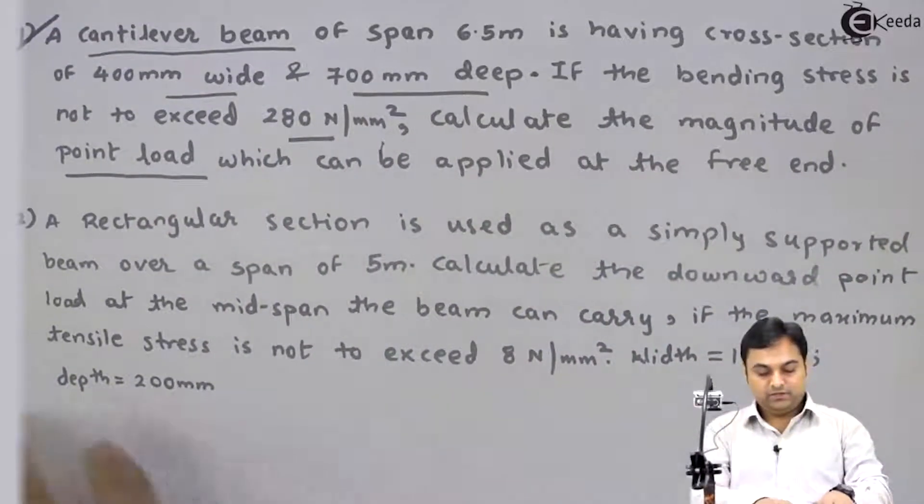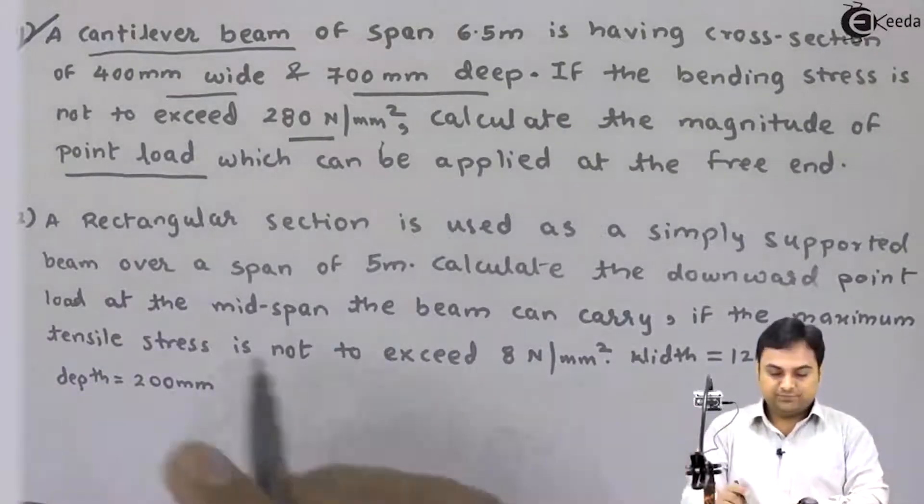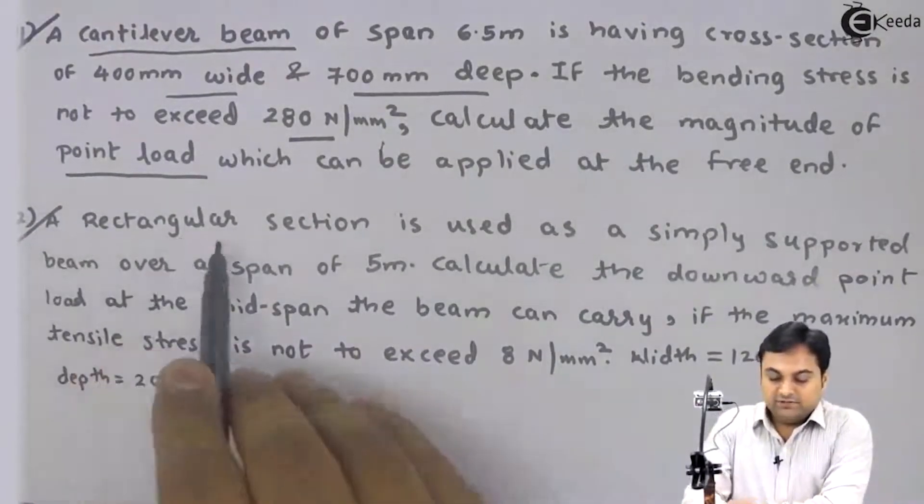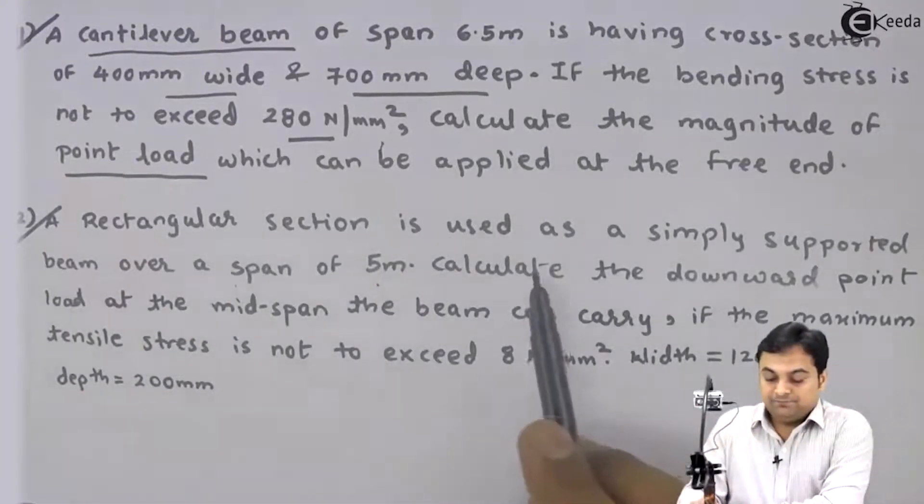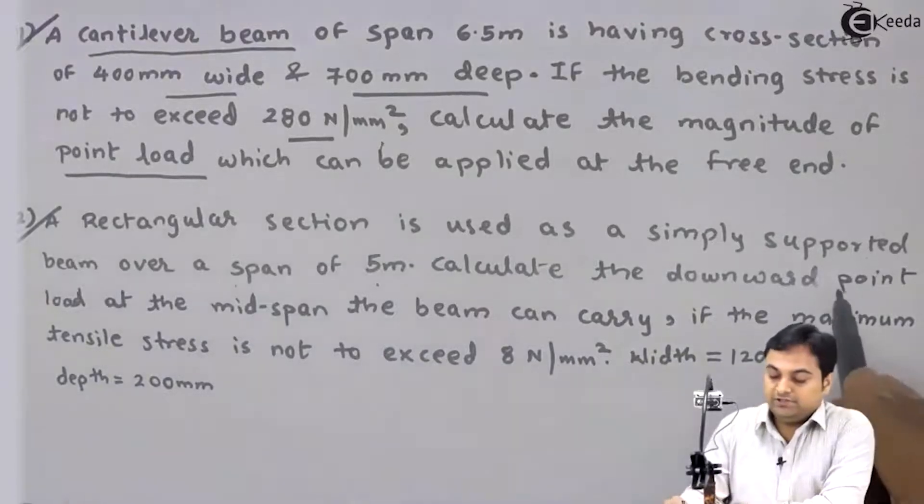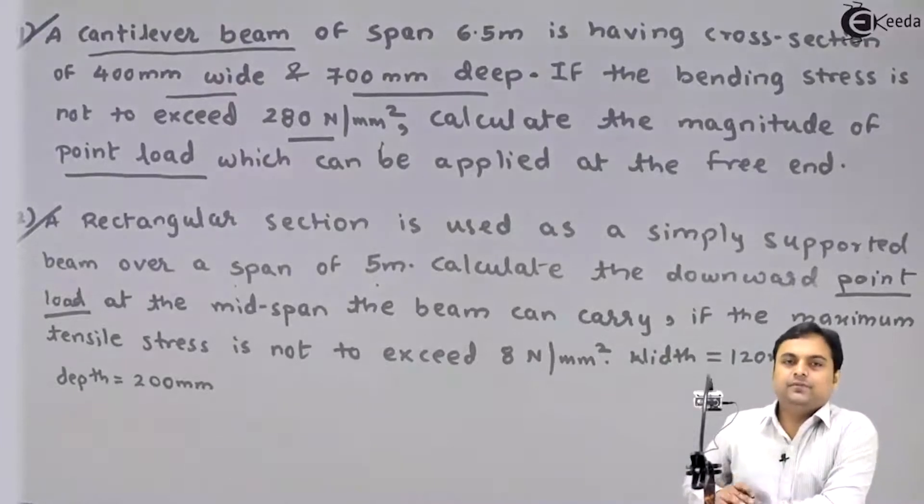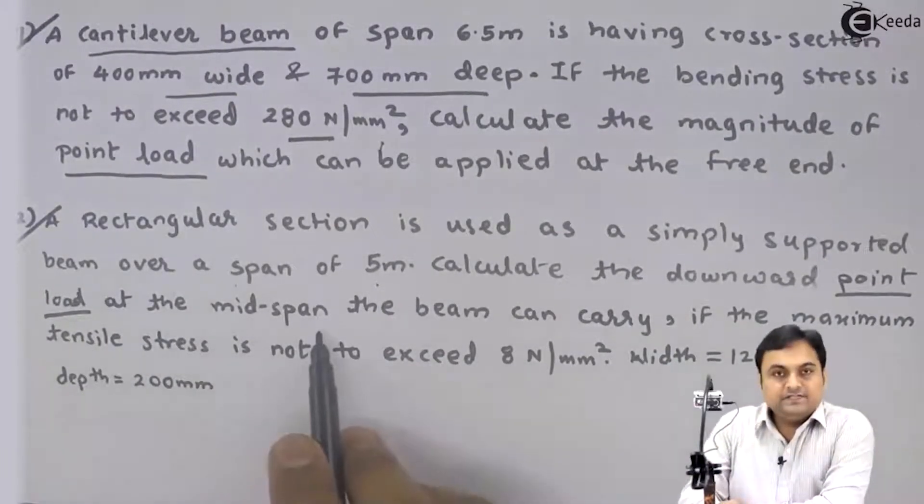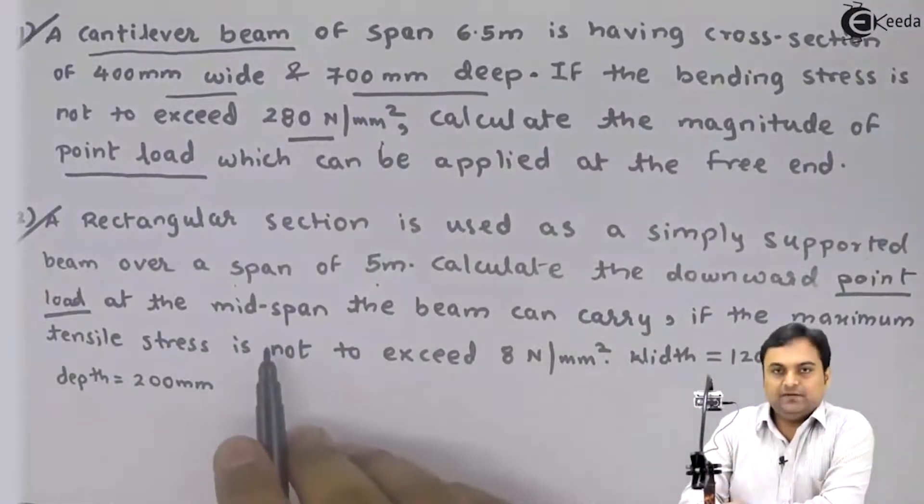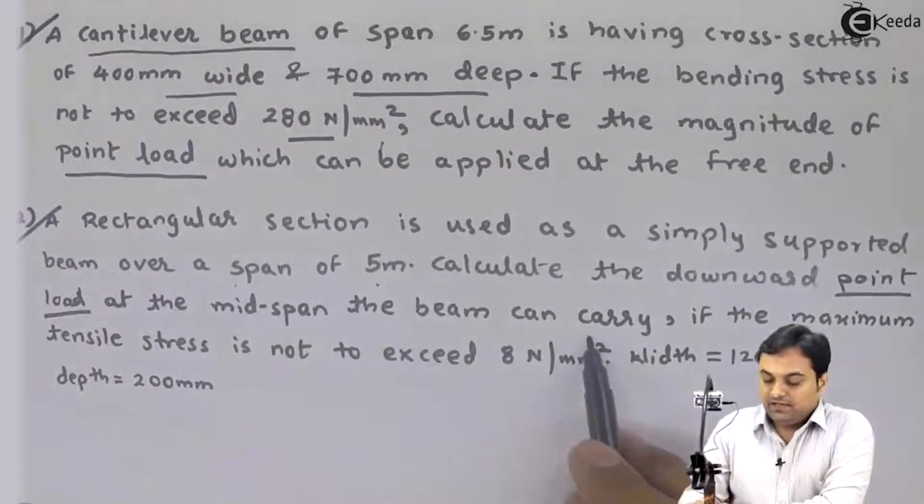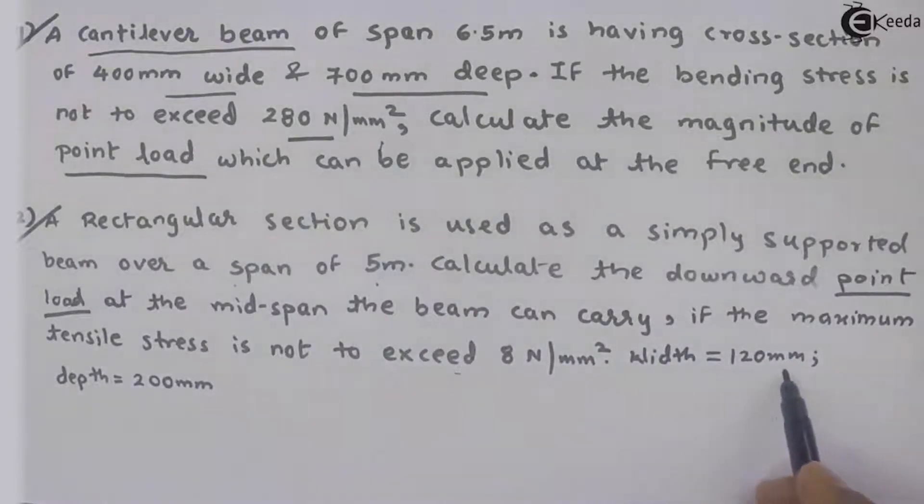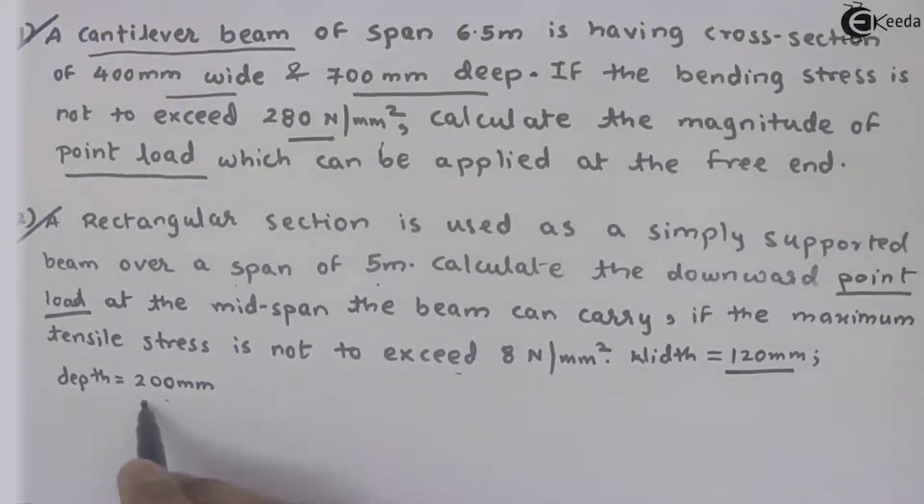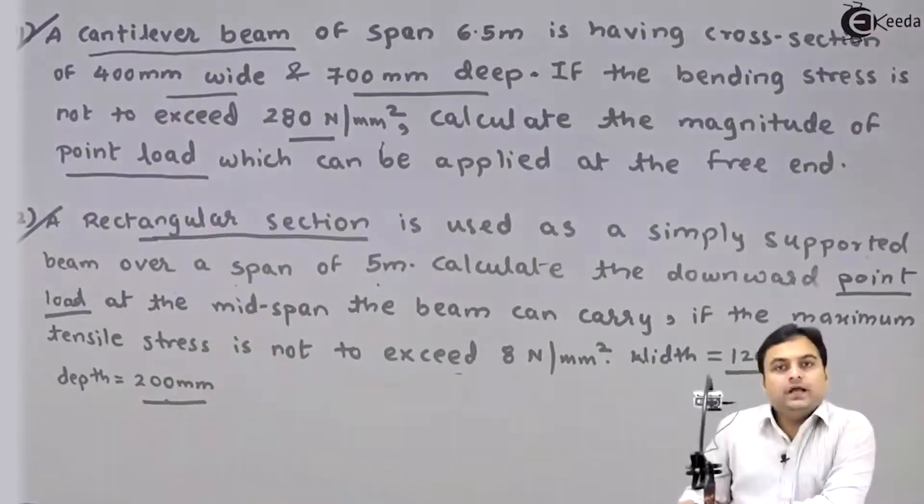We will be solving the second question. I am marking question number two. A rectangular section is used as a simply supported beam over a span of five meters. Calculate the downward point load at the mid span the beam can carry if the maximum tensile stress is not to exceed 8 N/mm². Width is 120 mm, depth is 200 mm. This indicates the cross-section is rectangular. I will write the data for this question.